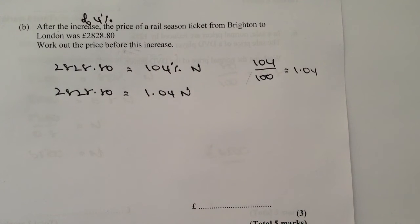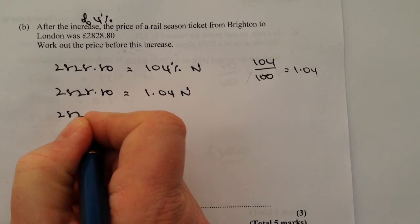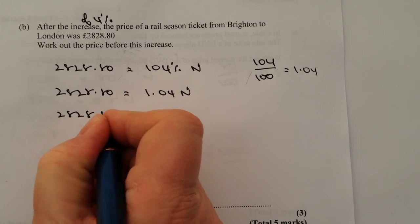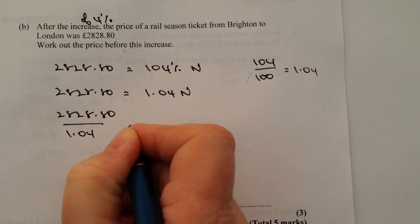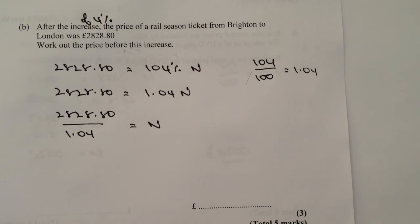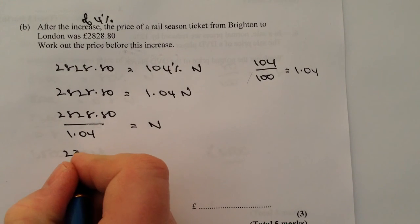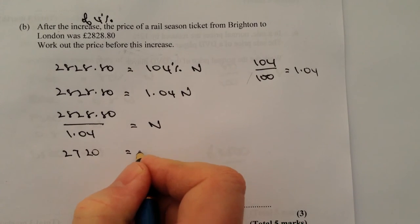N is the normal price. And then it's just really applying algebra. I'm going to divide through by 1.04. If I put this into my calculator, it allows me to work out that the normal price before the increase of 4% was £2,720.